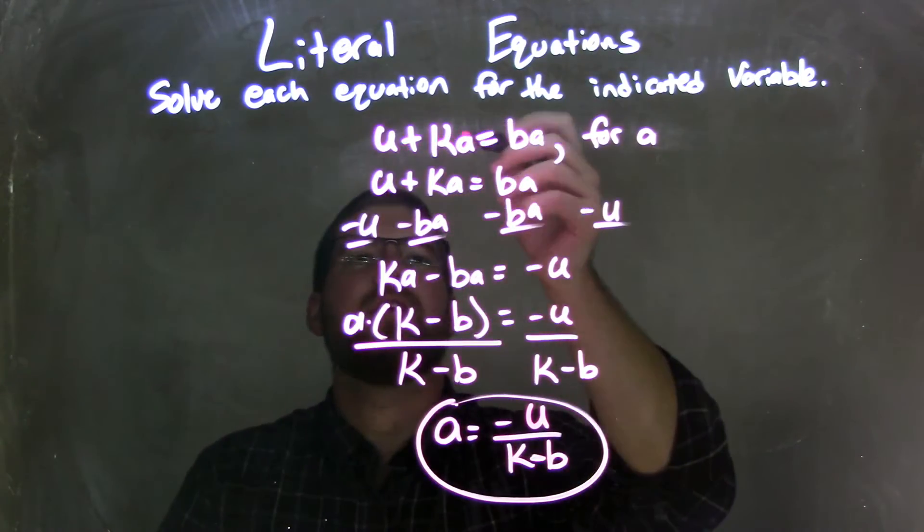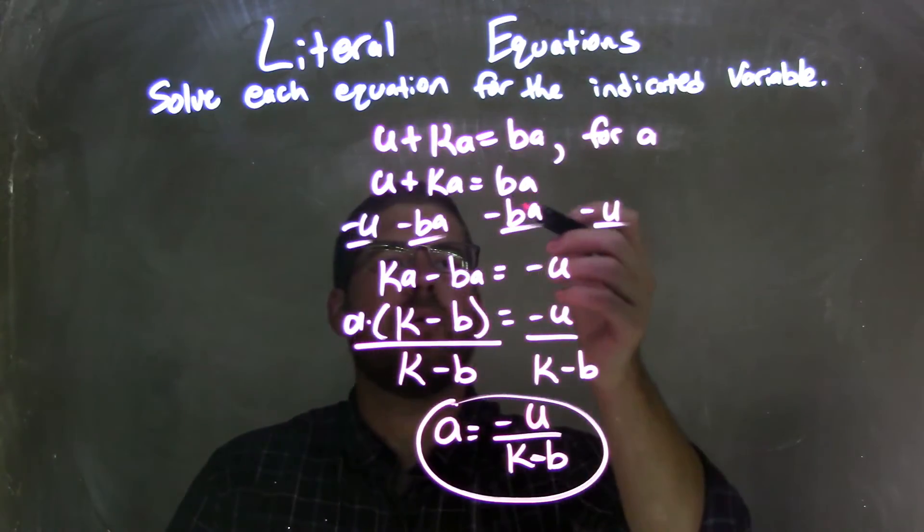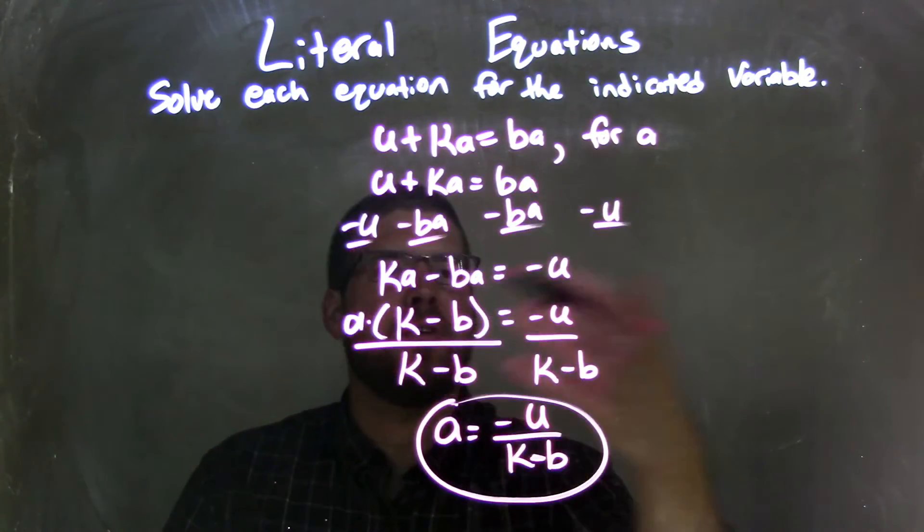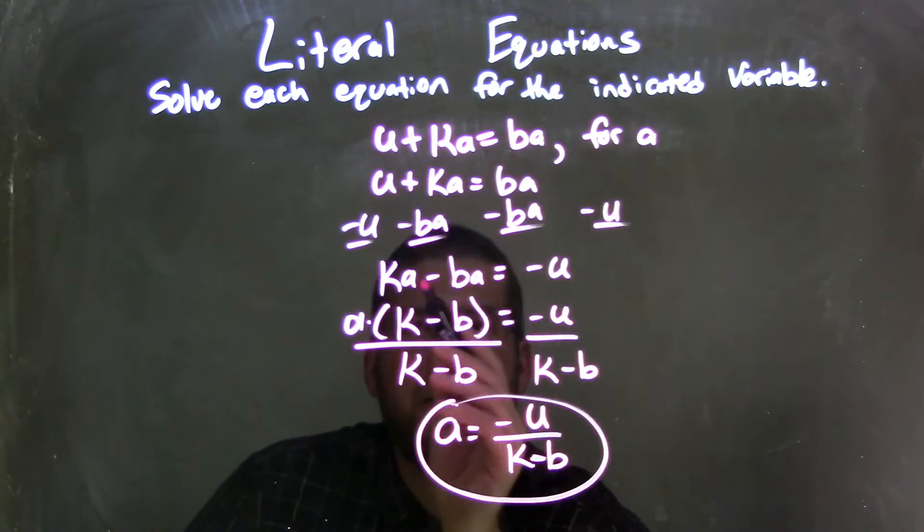So let's recap. We're given u plus ka equals ba, and we're going to solve that for a. I rewrote my equation and brought all my a's to the left and my u to the right. That left us with ka minus ba equals a negative u. I then saw that I could pull out an a from both parts here.